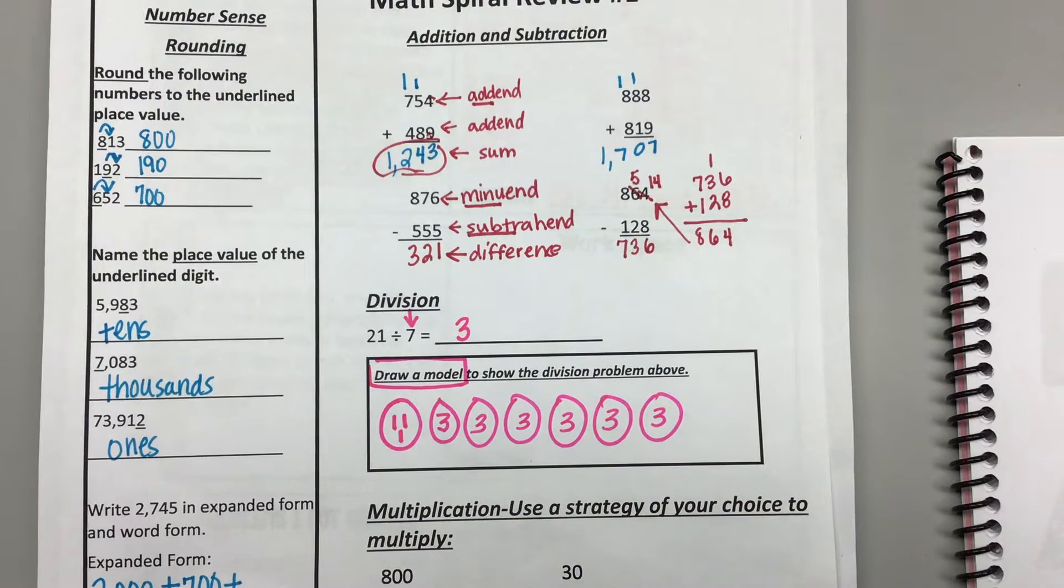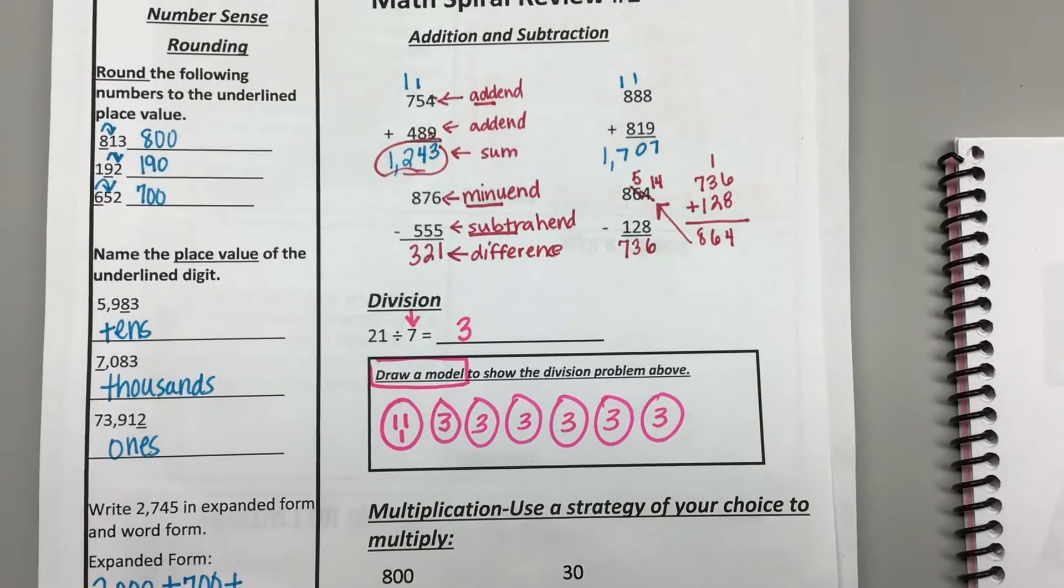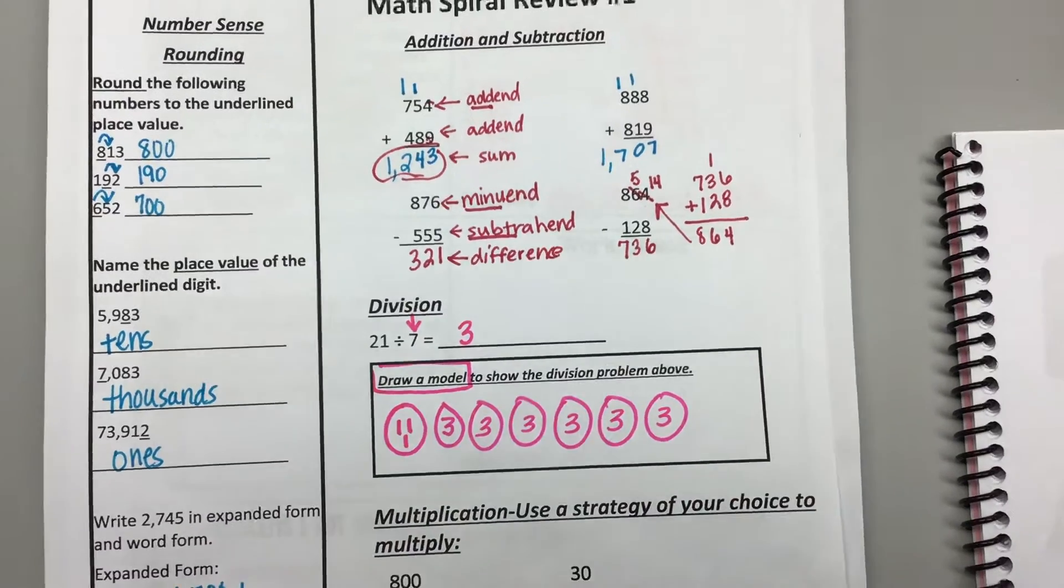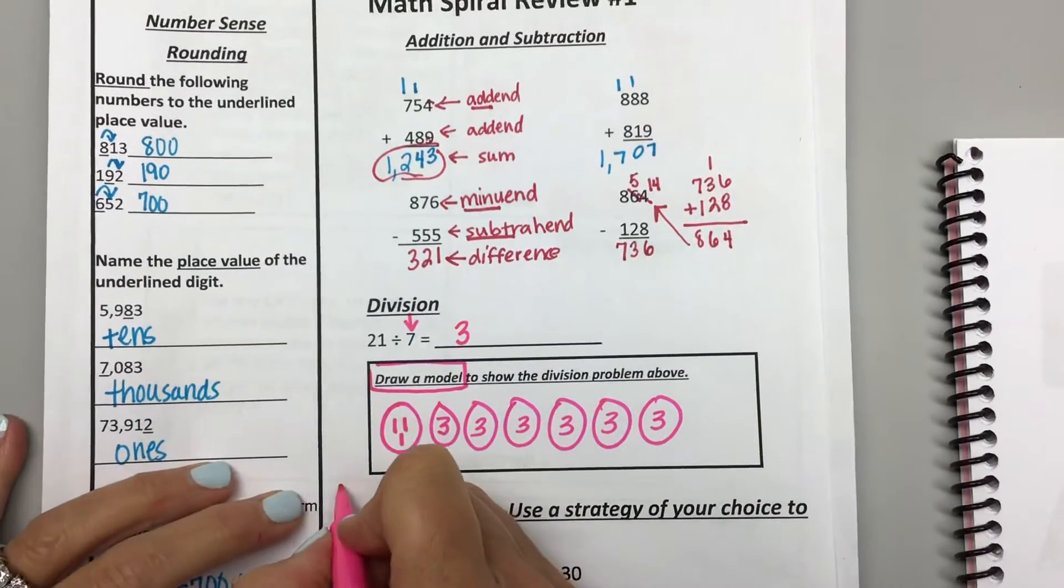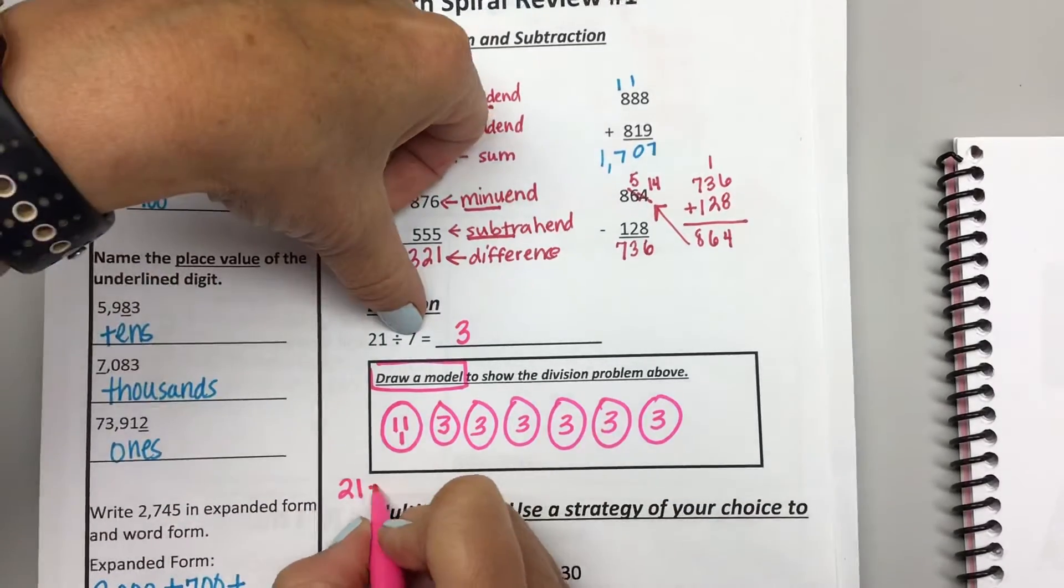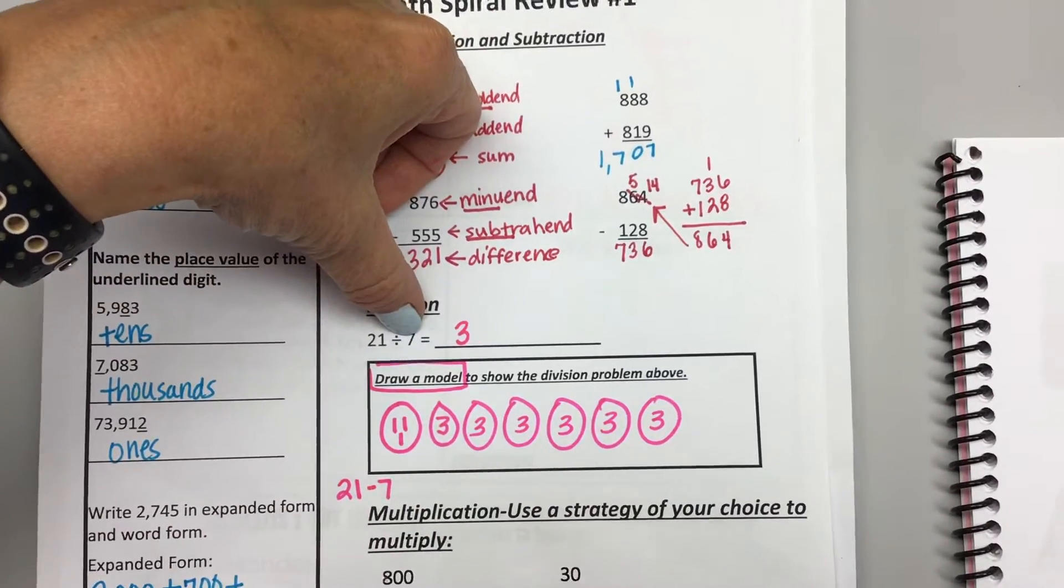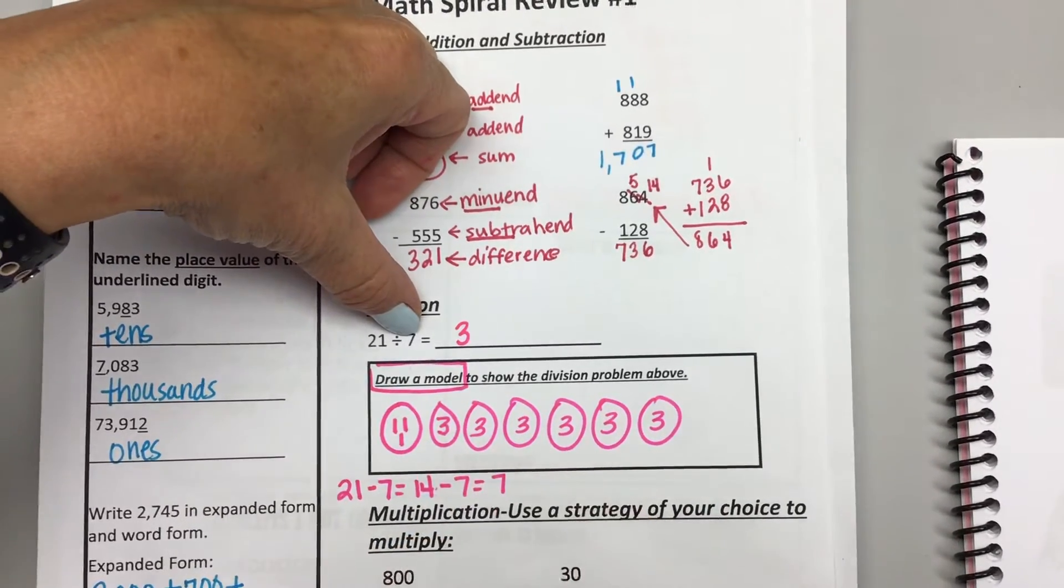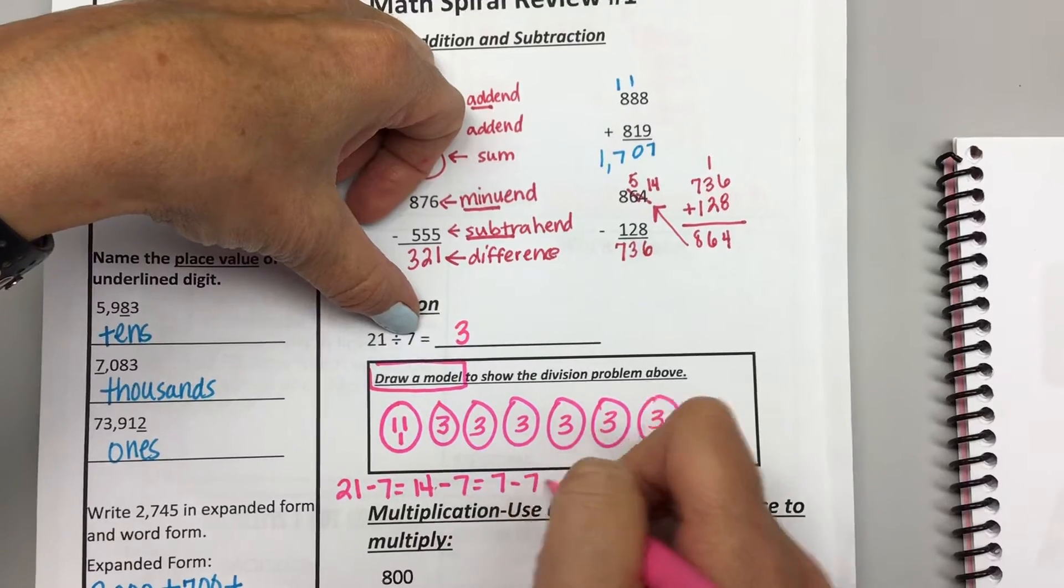Now, another way to model division is, we all know, you guys all told me earlier during this spiral review, we all know that our multiplication is repeated addition. If division is the opposite of multiplication, then division would be what? Repeated subtraction. So another way that we can model this would be to do 21, and you can do minus 7, which equals 14, minus 7, which equals 7, and then minus 7, which equals 0.